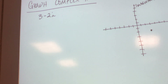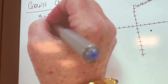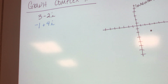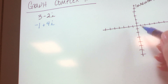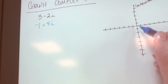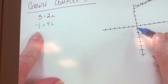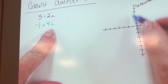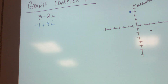You want to try one? Here's yours: negative 1 plus 4i. I want you to plot it. I'm starting at the origin. Where do I go first? To the left one — negative one is to the left one. Then where do I go? Up four. So there's my point.